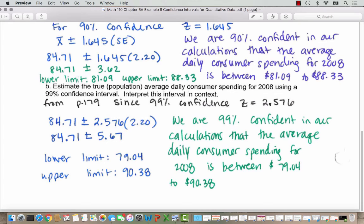When we subtract, 84.71 minus $5.67 gives us the lower limit of $79.04, and when we add, 84.71 plus $5.67 gives us the upper limit of $90.38. So this interval is wider. We have a lower lower limit and a higher upper limit because we are more confident. At the 90% confidence level, we're less confident, so our interval is a bit narrower.